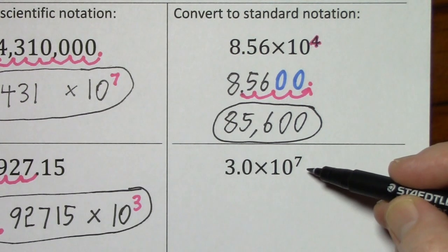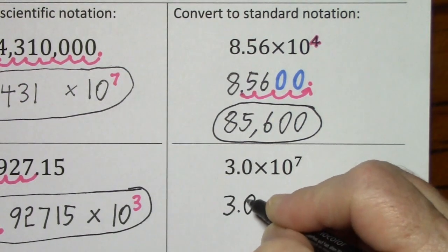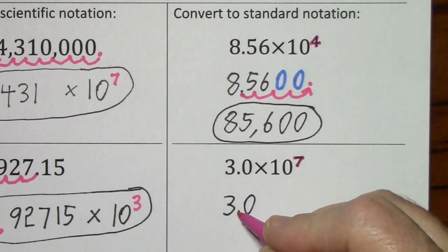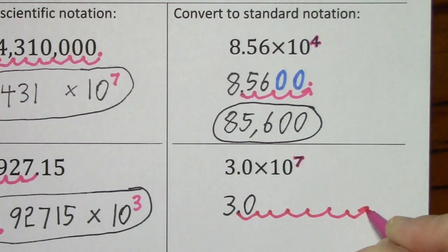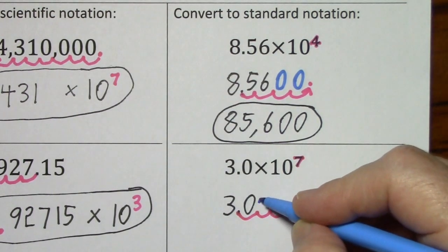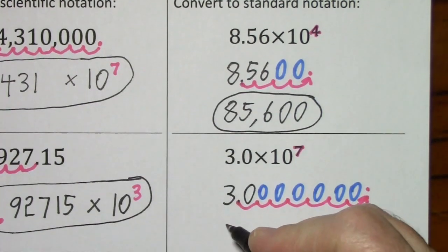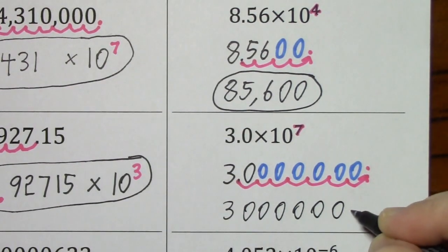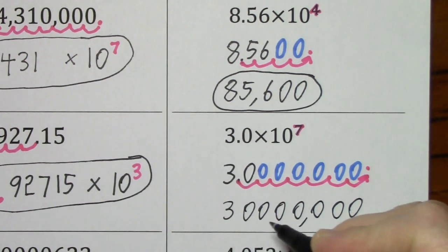So to convert this to standard notation or write it without exponents, we start with our 3.0. And because this is 10 raised to the seventh, we'll take this decimal and move it one, two, three, four, five, six, seven places. We'll hold these places with zeros. I've copied all the zeros, put in some commas.